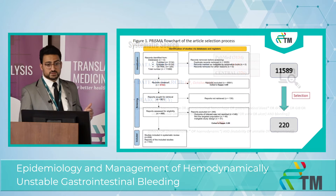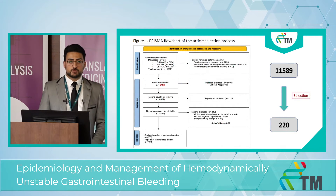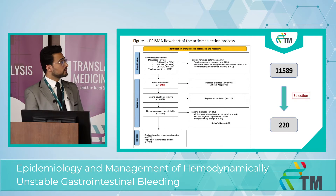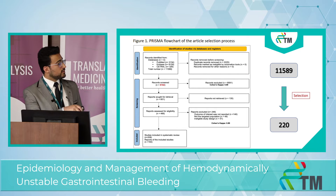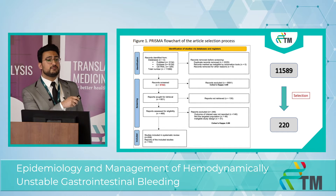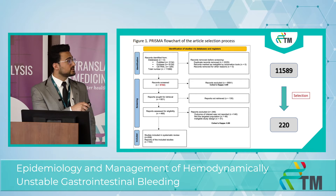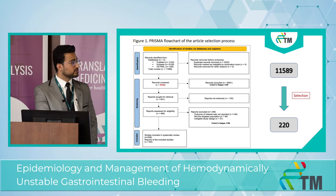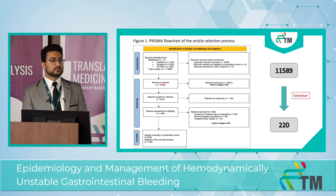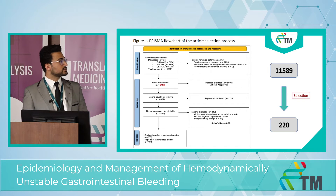This is the PRISMA flowchart for the article selection process. On the right side of the slide, you can see we got more than 11,000 initial hits. After the different selection stages, we ended up with 220 articles eligible for data extraction.